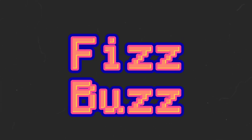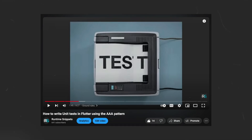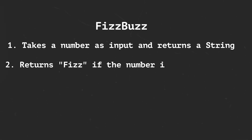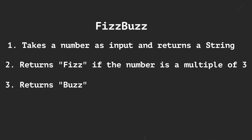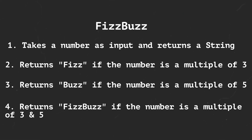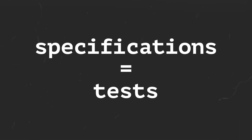We're going to be building a FizzBuzz solver using TDD. If you don't know anything about unit testing, I would recommend watching the beginner tutorial for unit testing first, linked in the video description. FizzBuzz is a small program that takes a number as input and returns it as a string. It returns Fizz if the number is a multiple of 3 and Buzz if it's a multiple of 5. If the number is both a multiple of 3 and 5, the program should return FizzBuzz. These specifications will become our requirements and we will write unit tests for them one by one until all requirements are met.